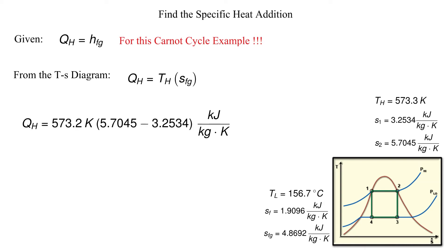If we have all this information, we can calculate QH. QH is equal to 1,405 kilojoules per kilogram.